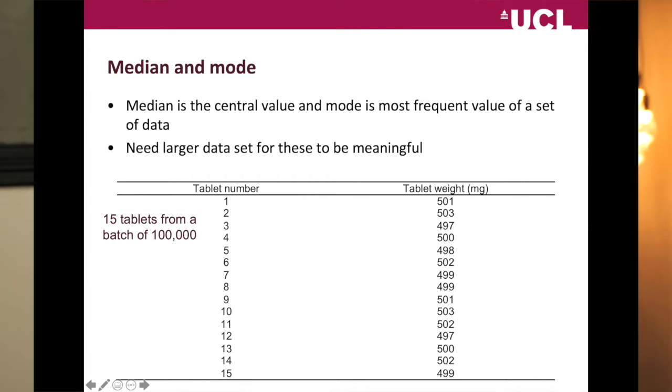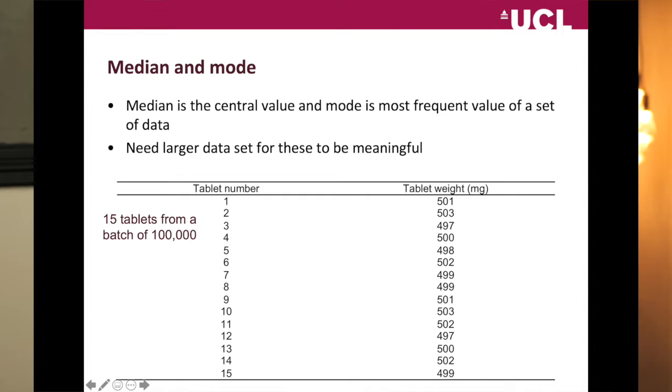You've probably heard of median and mode, so we'll look at them briefly, though we won't use them for the rest of the lecture. Median is the central value and mode is the most frequent value when data are arranged in numerical order. Median and mode really apply to larger data sets — with only three values, the median is always the middle one and you're not getting a very meaningful answer.